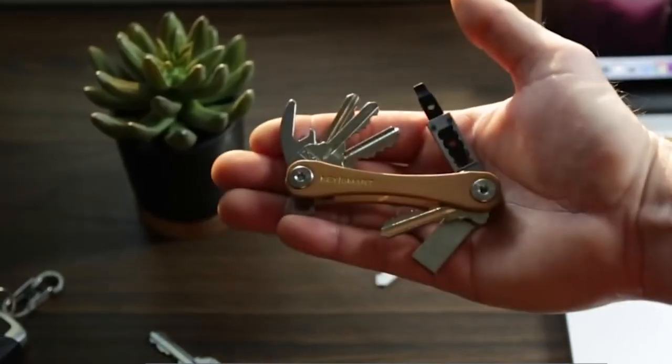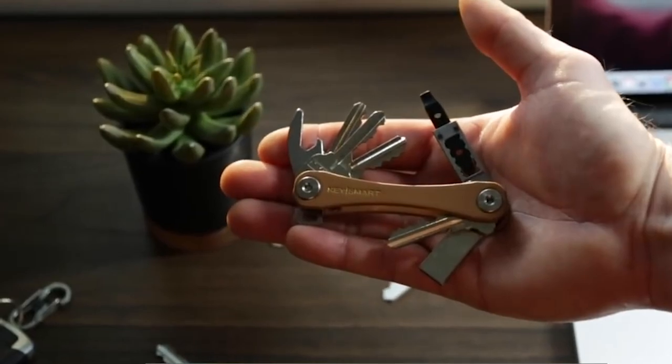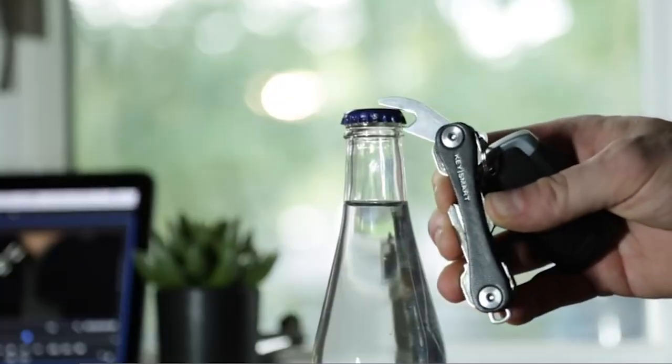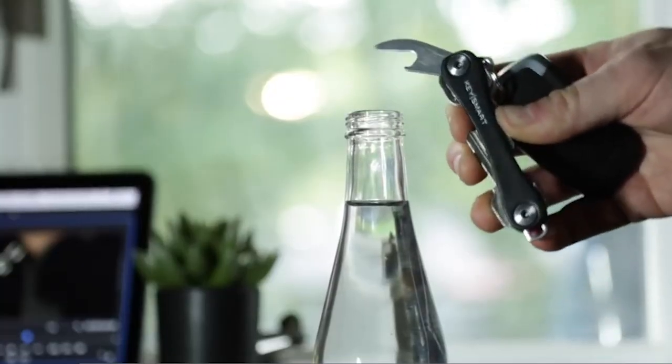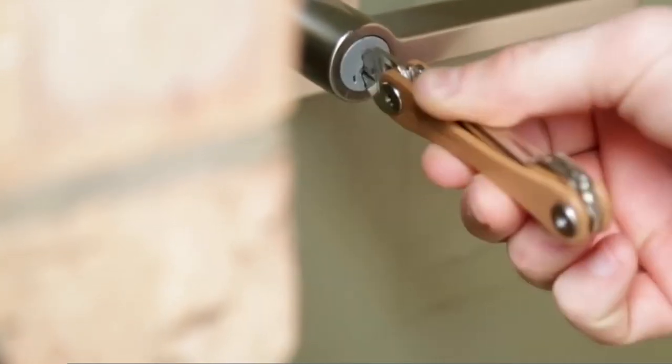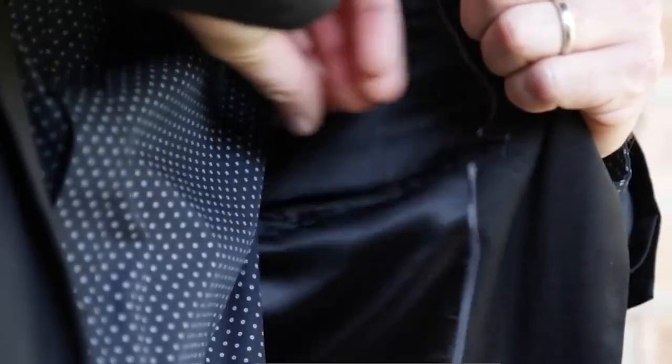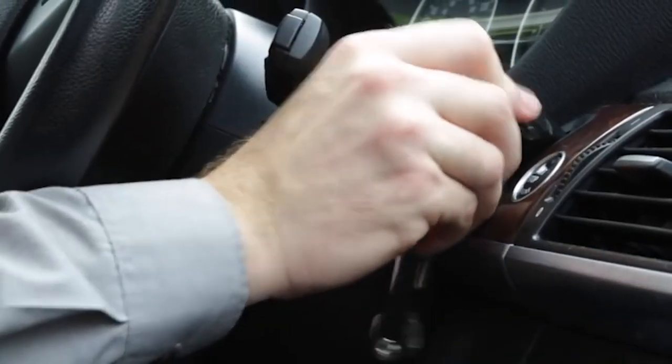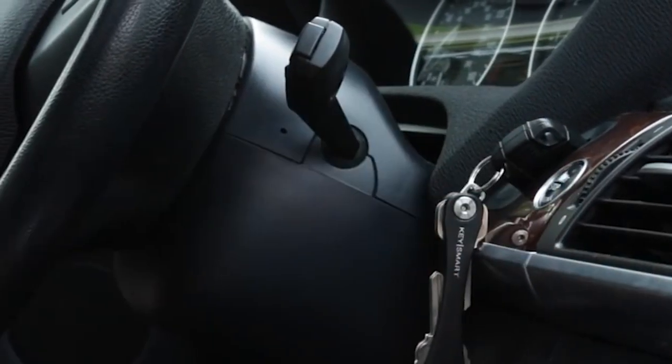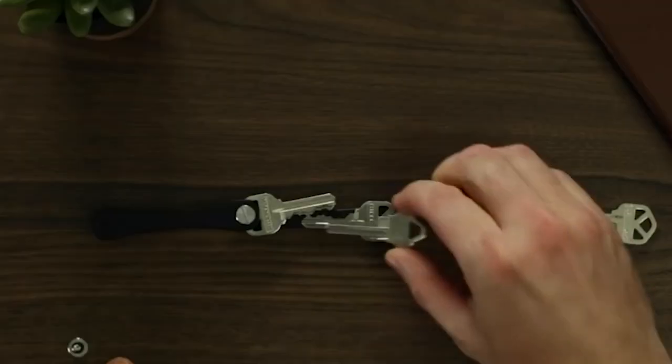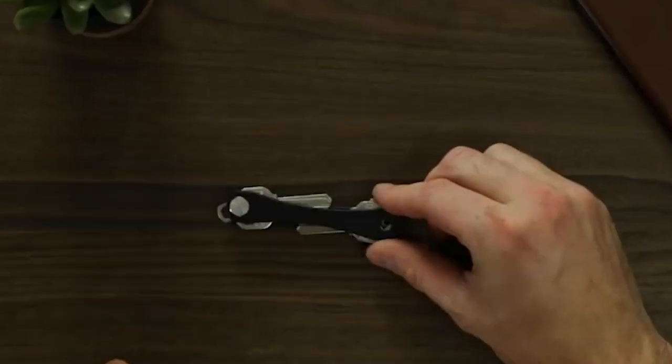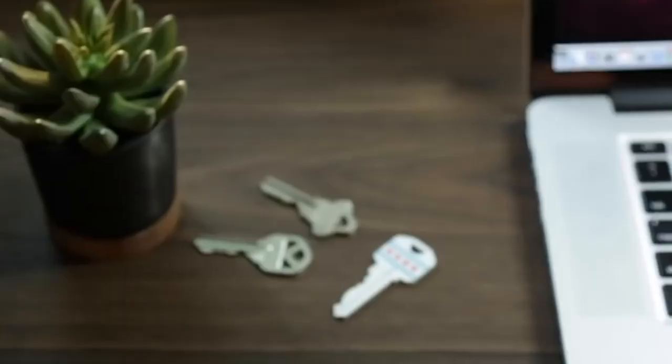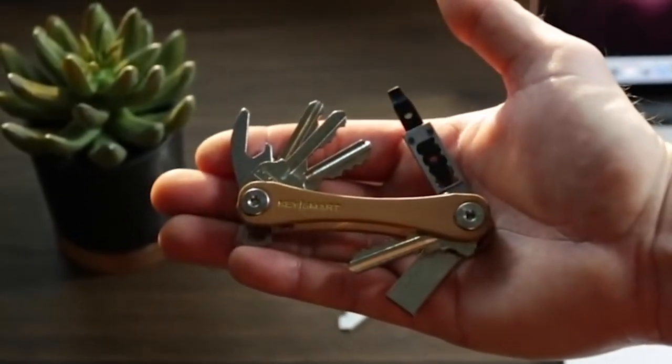But wait, there's more. This versatile device isn't limited to keys alone. It also doubles as a carrier for a USB flash drive or other accessories, adding even more functionality to its sleek frame. Plus, with an additional loop, you can conveniently attach car keys and keychains, keeping all your essentials in one organized place. Finally, a solution we've all been waiting for. It's time to simplify your life and say hello to a clutter-free and efficient way of carrying your keys.